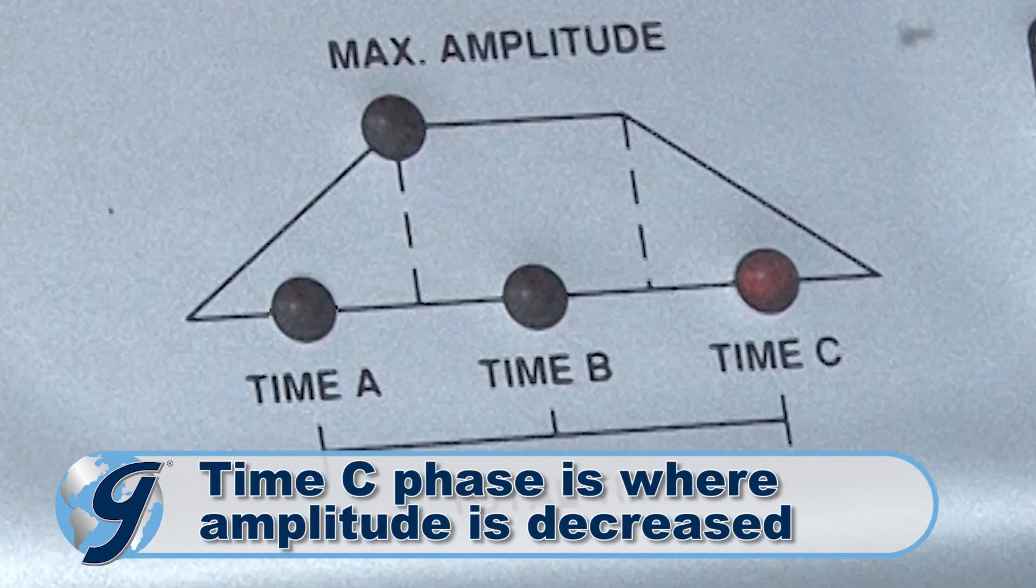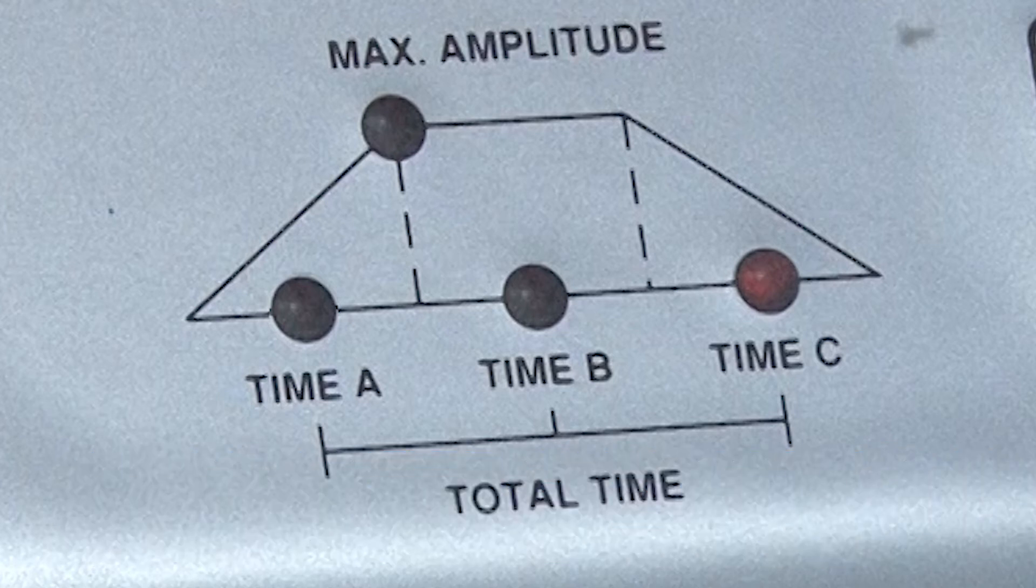The Time C phase is when testing amplitude declines from maximum to zero to separate any near-sized particles on each sieve.